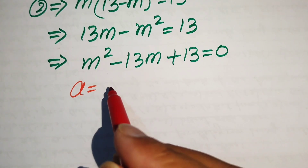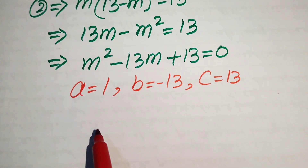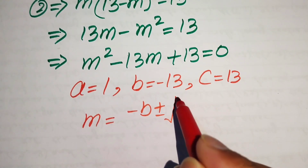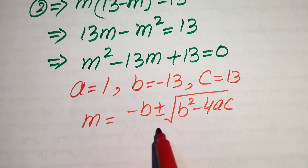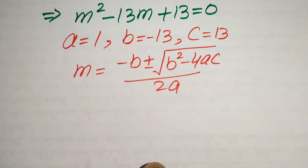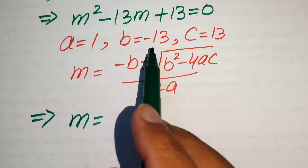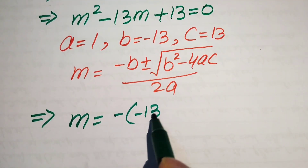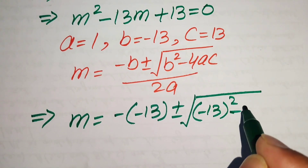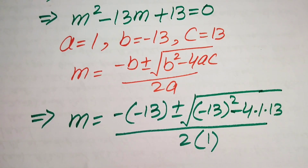The coefficients are a equals 1, b equals negative 13, and c equals 13. The quadratic formula is: m equals negative b plus or minus the square root of b squared minus 4ac, all divided by 2a. We now substitute the values of a, b, and c into this formula. The value of b is negative 13, so negative b becomes positive 13.